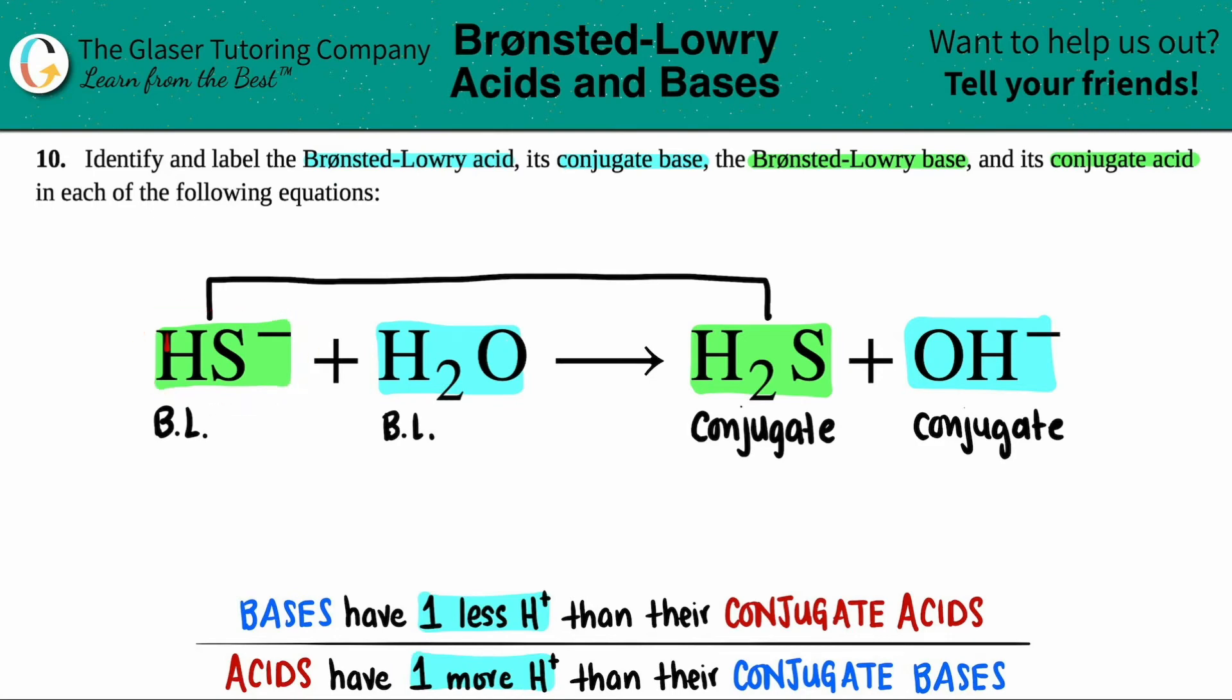In HS minus, you got one hydrogen. In H2S, you got two hydrogens. So I got one more here. The acid always has one more. So this has to be the acid of the pair. And then likewise, this has to be the base of the pair.